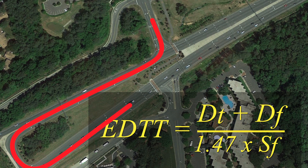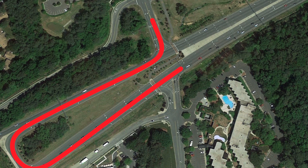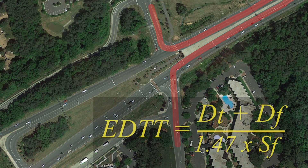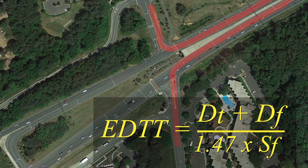At RCUT intersections, extra distance travel time is applicable to all drivers who arrive on the minor street but desire to make a left turn movement or through movement. These left turn and through movement vehicles must travel around the U-turn crossover to complete their movement. Extra distance travel time is the time required to drive this extra distance.